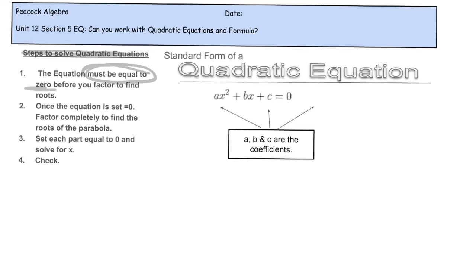Before we can factor it — I'm not sure if I said this yesterday, and I know there were some questions about that in the homework. It's one of those things that's just so intuitive that I didn't think to say it, and for that I do apologize. So once the equation is set equal to zero, you're going to factor it completely to find the roots of the parabola. Lastly, you set each part equal to zero and solve for x, and then you would check. Our quadratic equation looks like ax squared plus bx plus c equals zero, where a, b, and c are the coefficients.